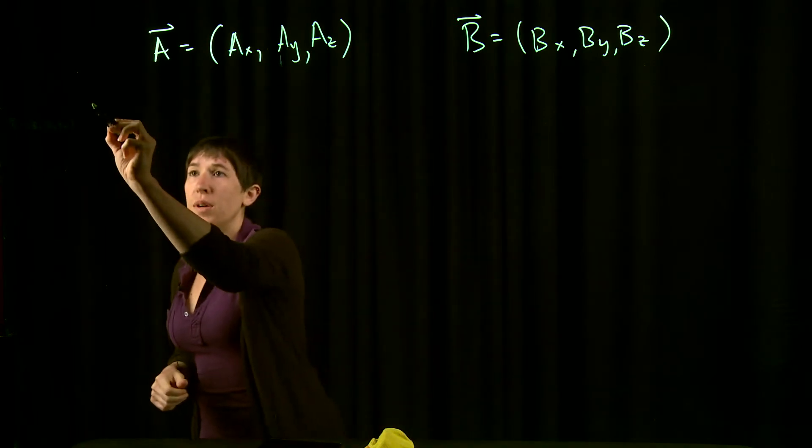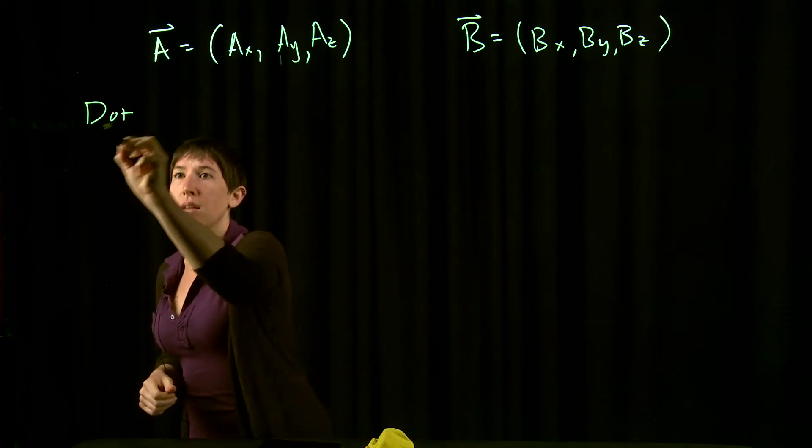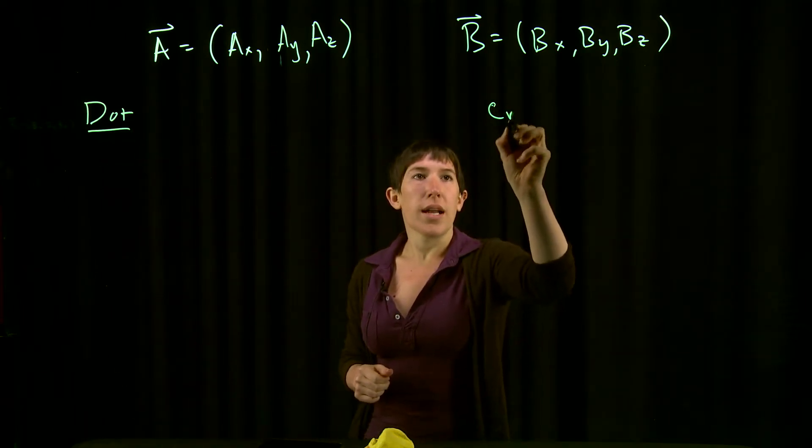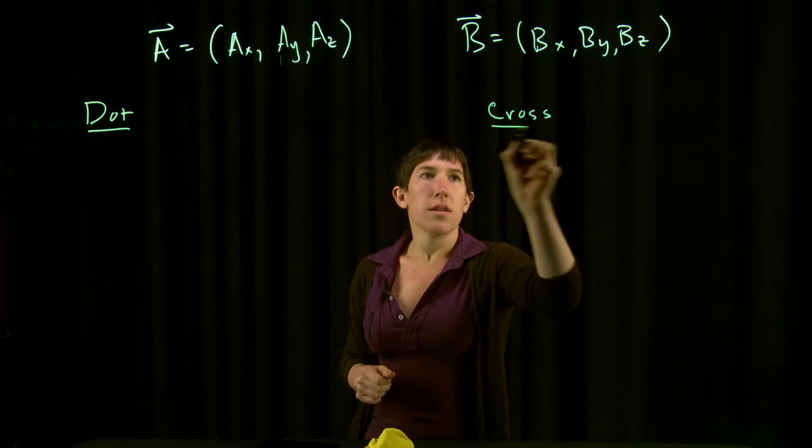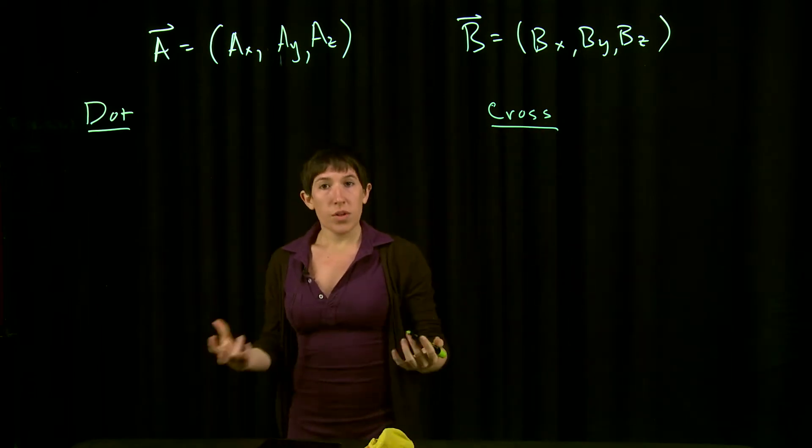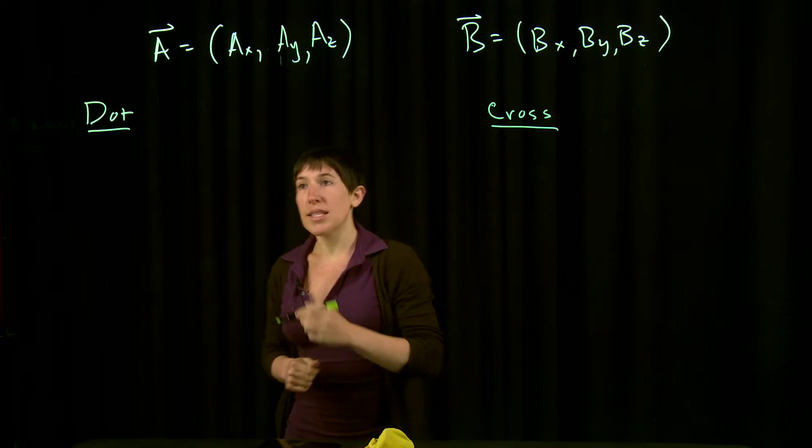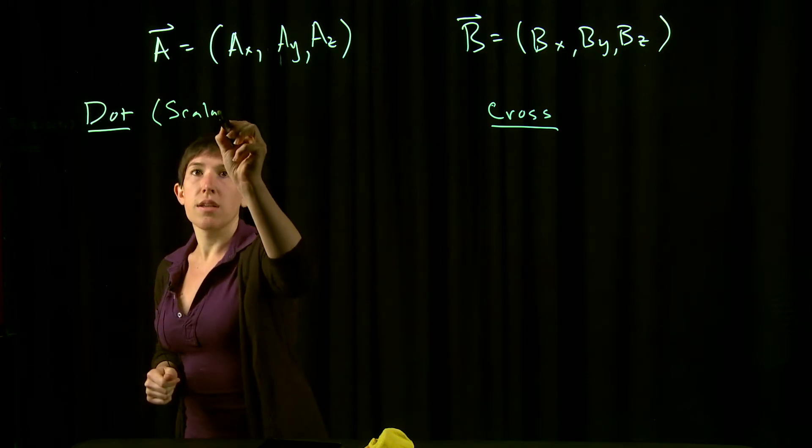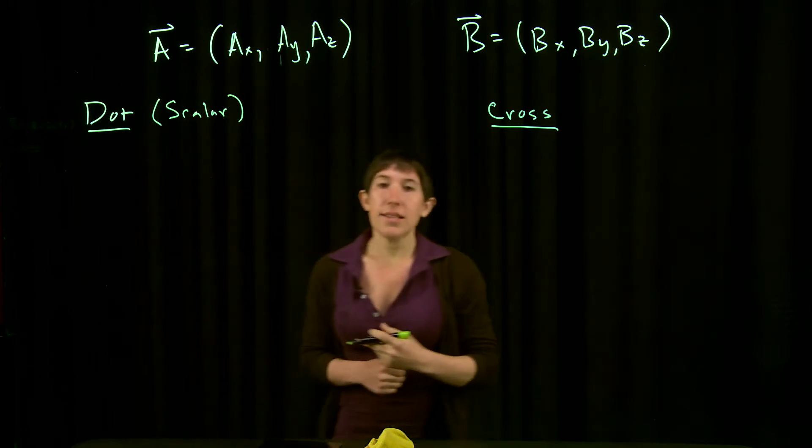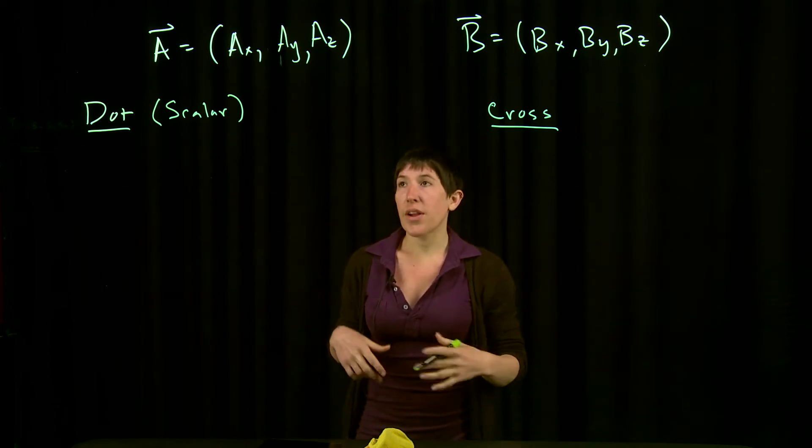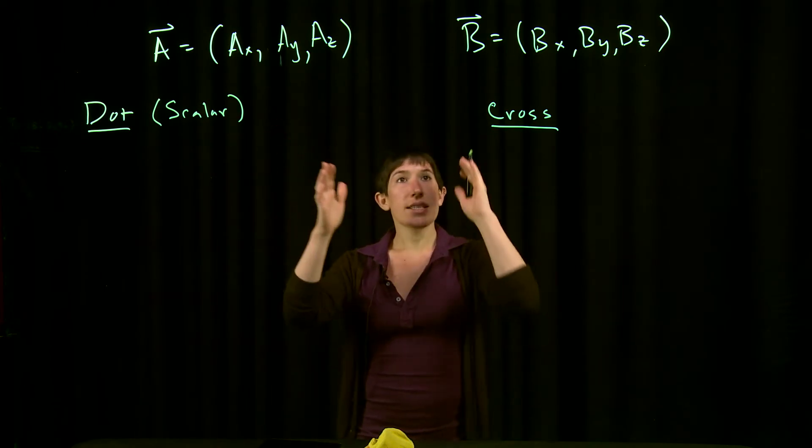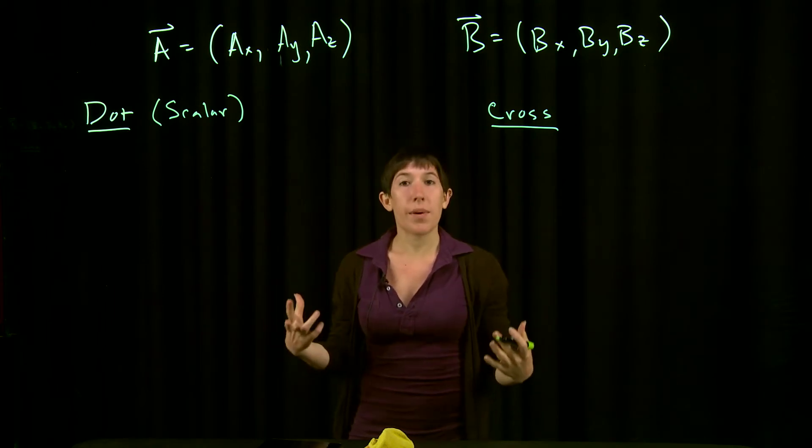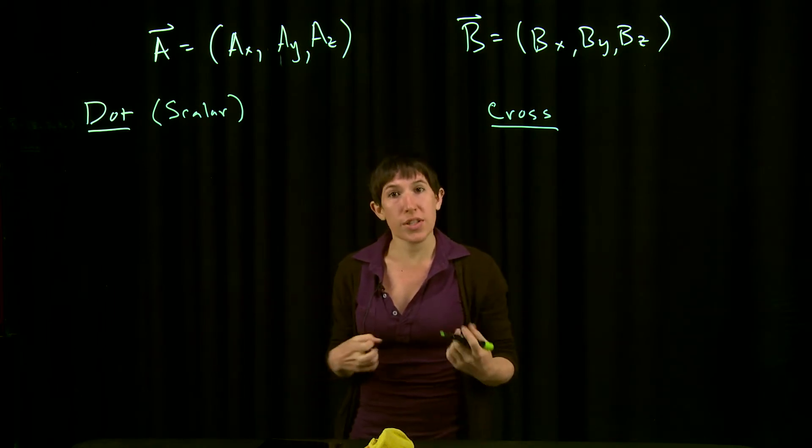The first is the dot product, and the second is the cross product. We'll start by talking about the dot product, which is often referred to as the scalar product. That's because when you multiply vector A dot vector B, you end up with a scalar quantity, just a number with no direction associated with it.